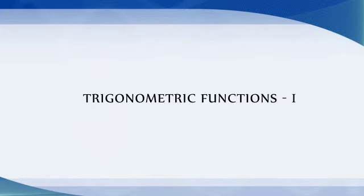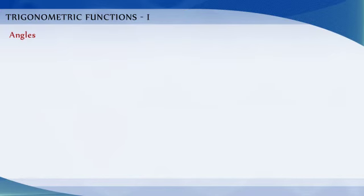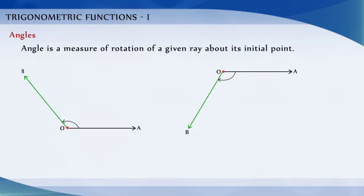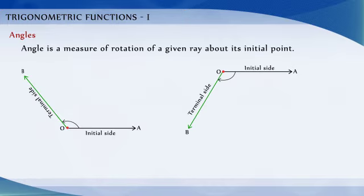Trigonometric Functions. Angles. An angle is a measure of rotation of a given ray about its initial point. The original ray is called the initial side and the final position of the ray after rotation is called the terminal side of the angle. The point of rotation is called the vertex.